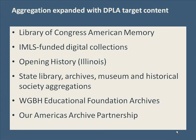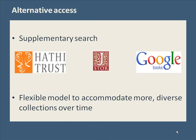As part of our beta sprint, we expanded the aggregation to include target content identified by the DPLA Content Working Group, including the Library of Congress's American Memory Collections. The aggregation continues to grow to include more state libraries, historical societies, etc. In addition, we accommodated other DPLA target content of more diverse types through simultaneous supplementary meta-search, which now offers search across millions of books in the HathiTrust, JSTOR, and Google Books.